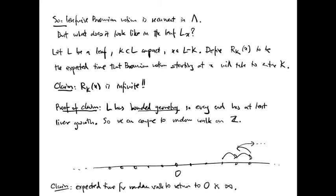Let's prove this claim. The leaf L has bounded geometry, meaning that every end has at least linear growth. So we can compare this claim to the analogous case of a random walk on Z. Let's take a random walk on Z, which at every step moves left or right with equal probability.